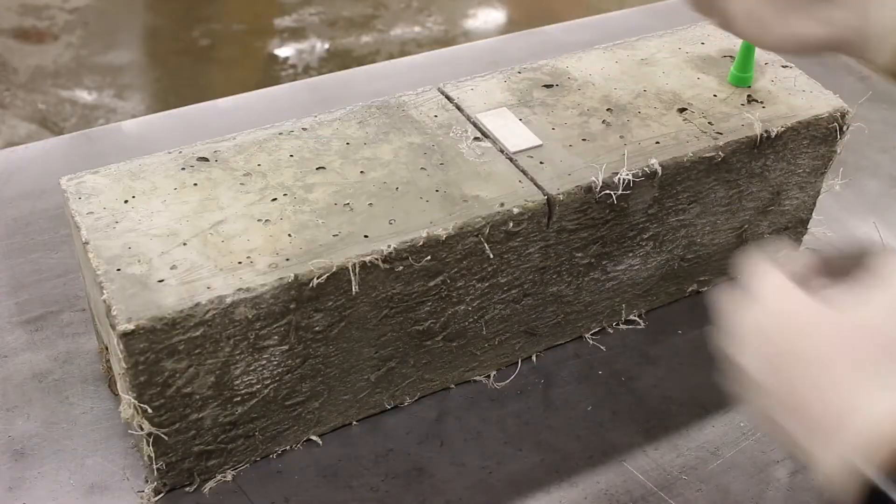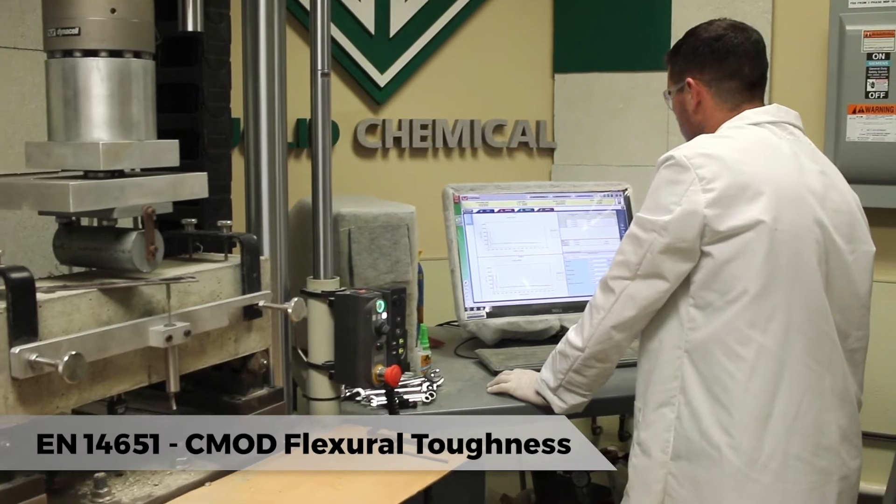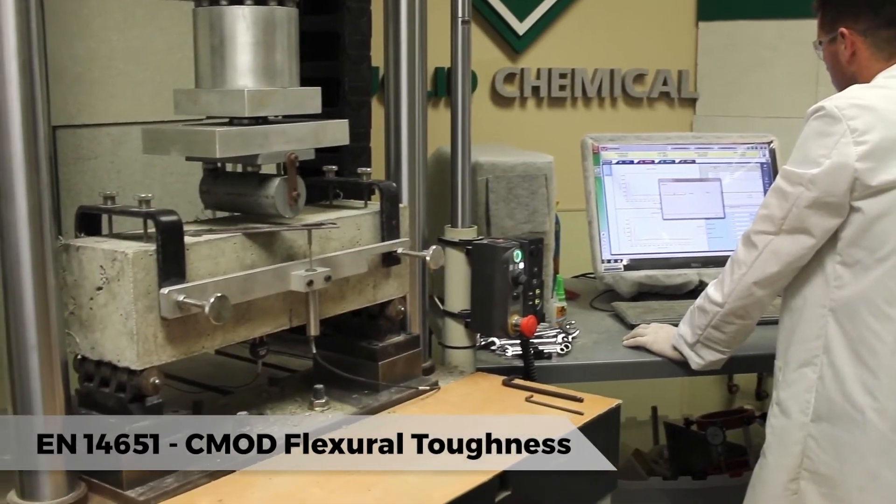The EN 14651 test is a European version of the C1609 method but with slight variations in the procedure and setup of the beams.